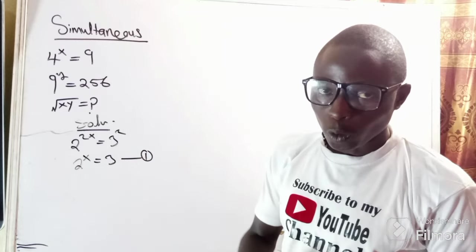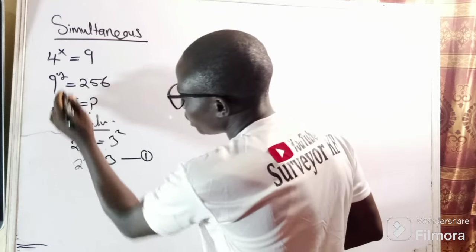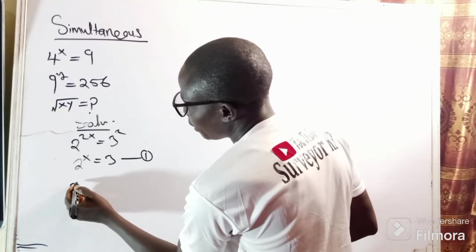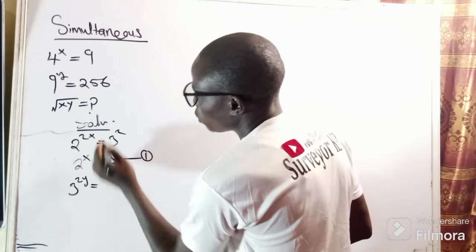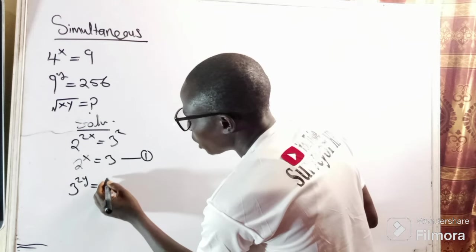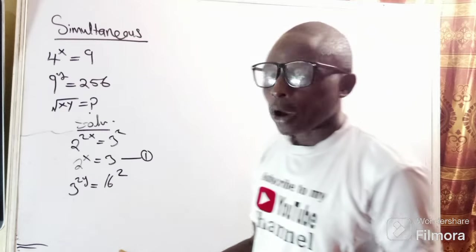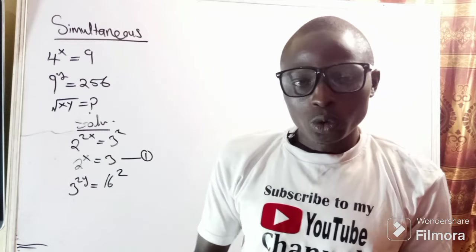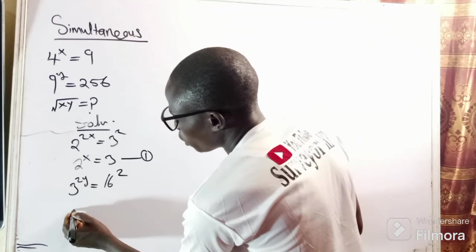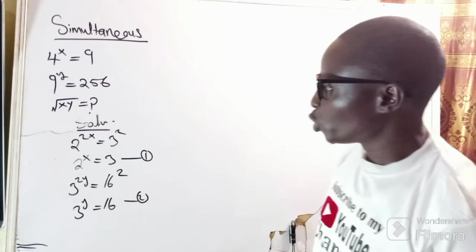Now the second original equation: 9 to the power of y is the same as 3 to the power of 2y, equals 256, which is the same as 16 squared. When I consider the arguments on both sides to be the same and eliminate the squares, I get 3 to the power of y equals 16. I call this equation 2.